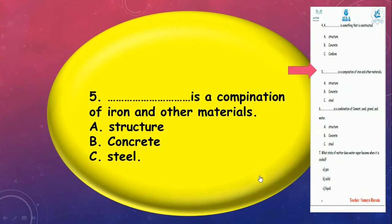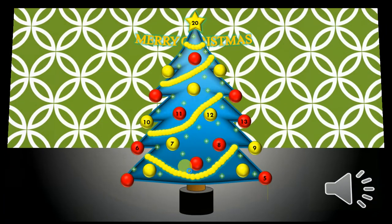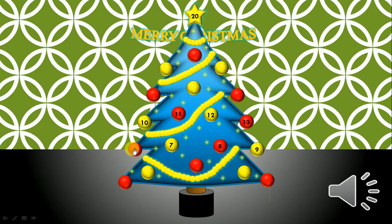Number 5, I'm sorry. Number 5: What is a combination of iron and other materials? Steel. Steel, super guys, good job.